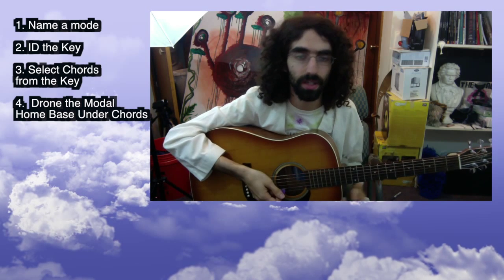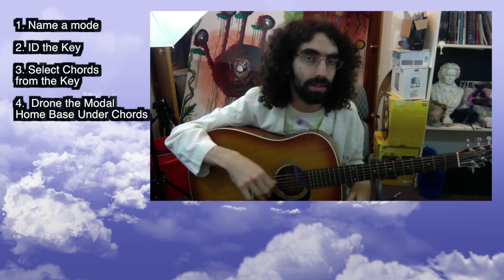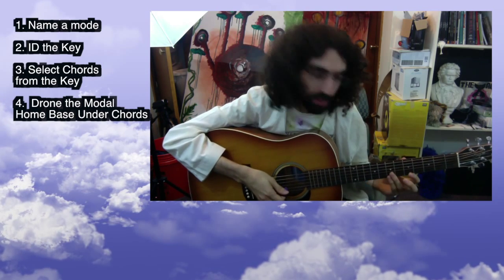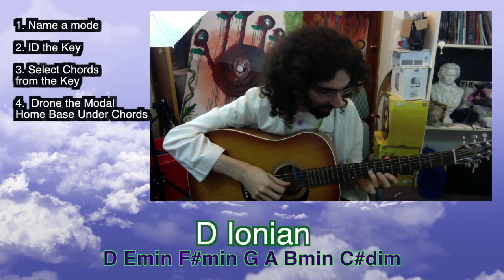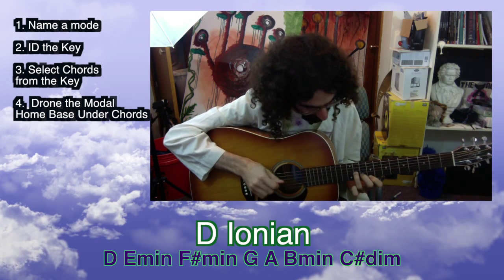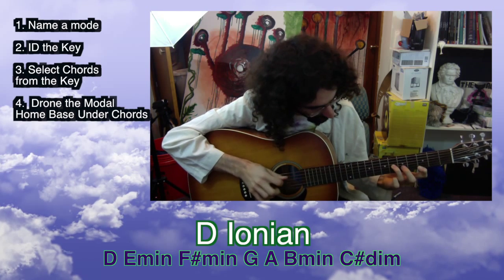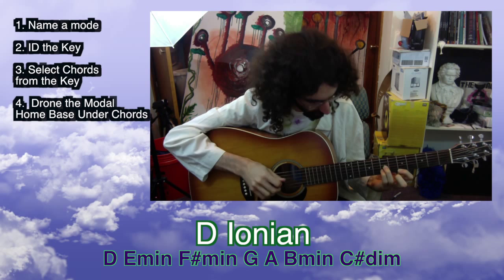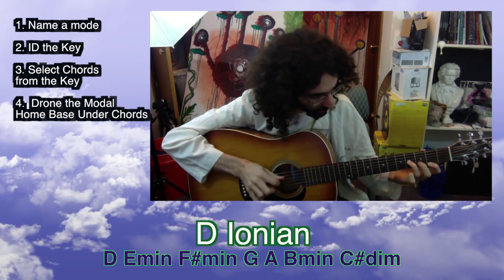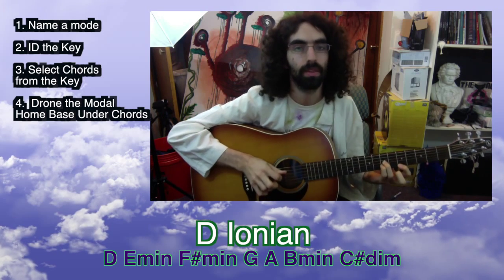Those were chords for Dorian. Now let's go back a step to D Ionian. Ionian is the first mode, so D is the first note of the key you're in, which means you're in D major. Here are the triads in the key of D major: D, E minor, F sharp minor, G, A major, B minor, then C sharp diminished, and then D — I have these written out for you. Now I'm going to drone D under these chords and you'll hear a very familiar D Ionian sound. It resolves nicely to the D major again.